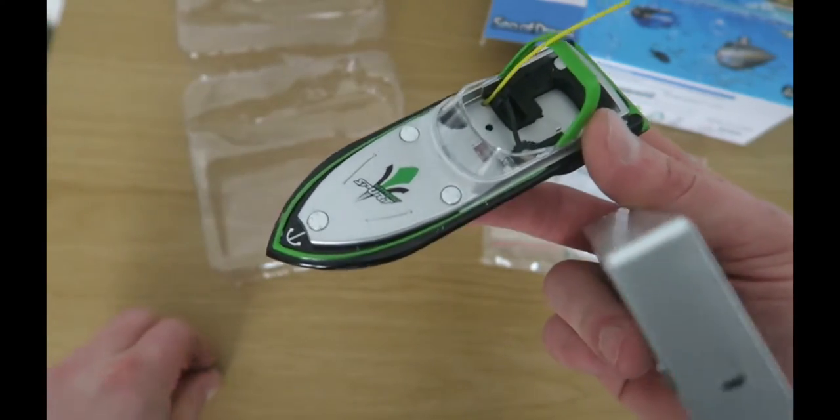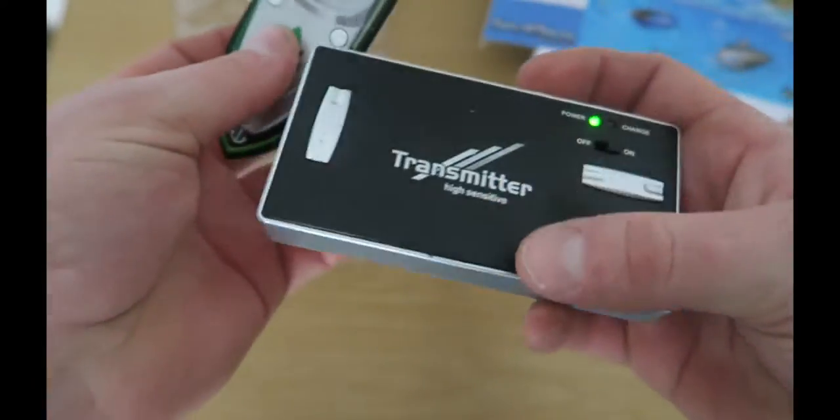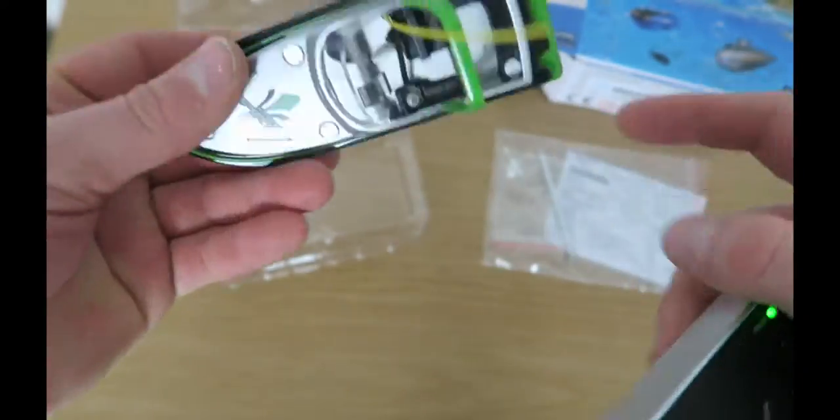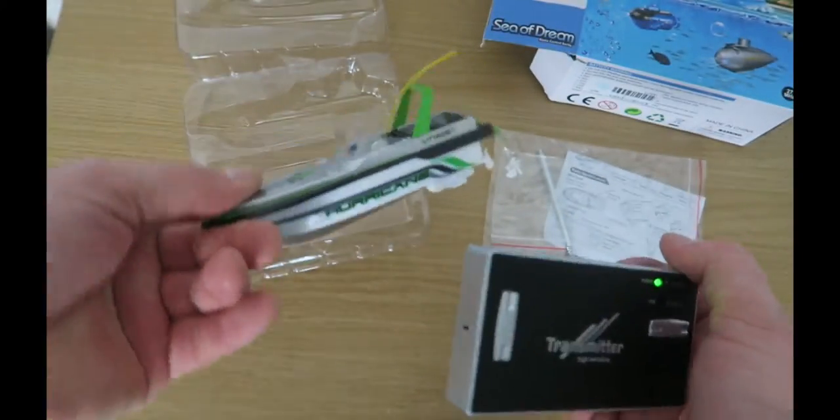If you want the boat not to be on, simply insert the white plug back in again. When the remote's on, it doesn't let any function happen. It's kind of used as a switch. That is the unboxing of the Hurricane boat. Let's go see what it's like in water.